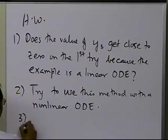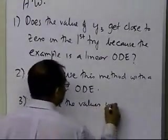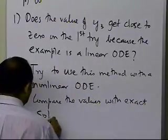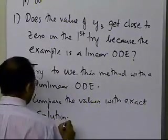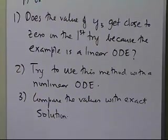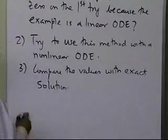The third one is compare the values with exact solution. Because we are taking h equal to 3, that means the kind of answers you are getting are not exact. We're using a shooting method to solve a boundary value problem, but still it's a numerical scheme, so I would like you to compare the values with the exact solution.